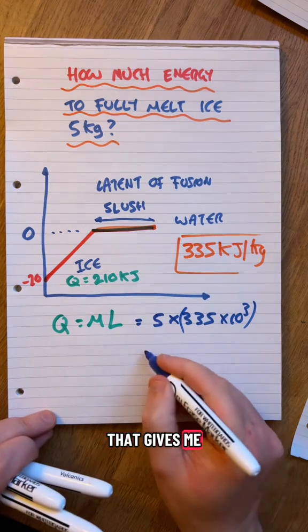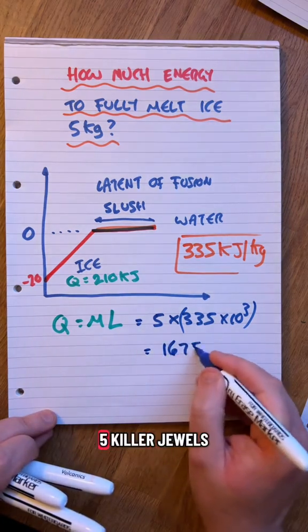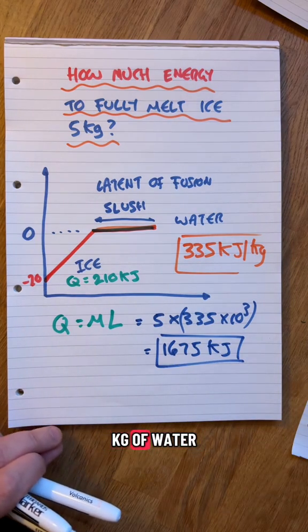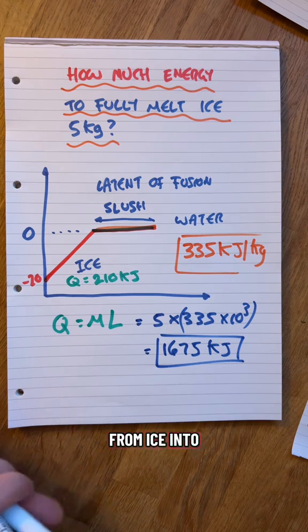That gives me 1675 kilojoules. That is to turn five kilograms of ice into fully melted water.